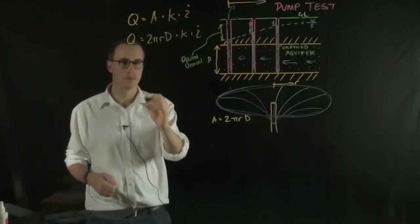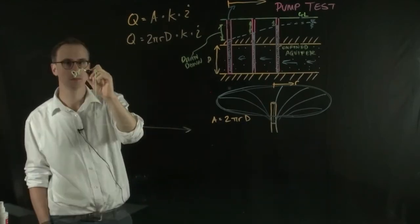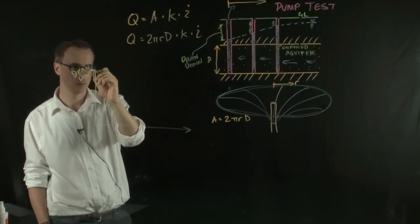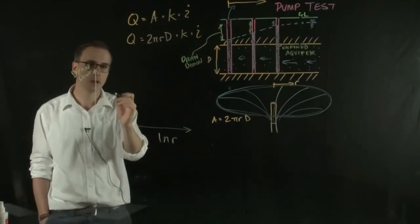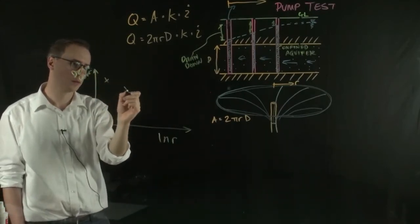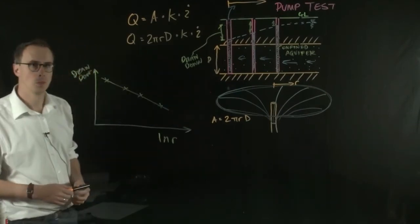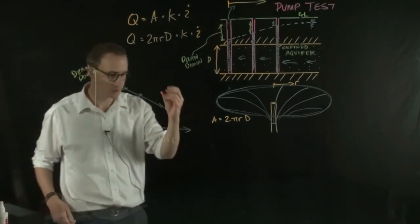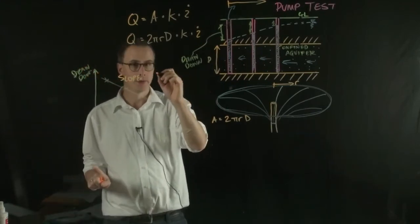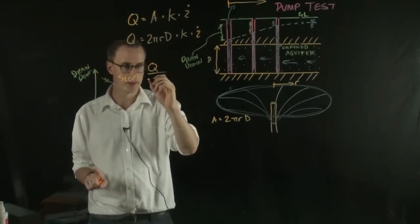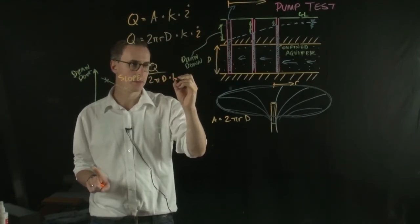And we plot that graph of drawdown against the log or natural log of R and then we'll get a straight line. So the slope of this line is actually equal to the flow divided by the 2πD multiplied by the permeability.